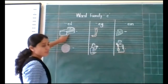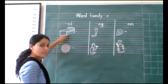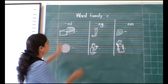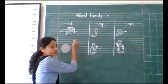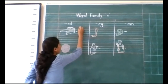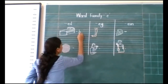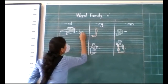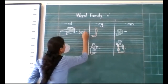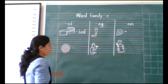Look here. Identify the picture. What is this? This is bed. And the word starts with the sound B. B-E-D, bed.